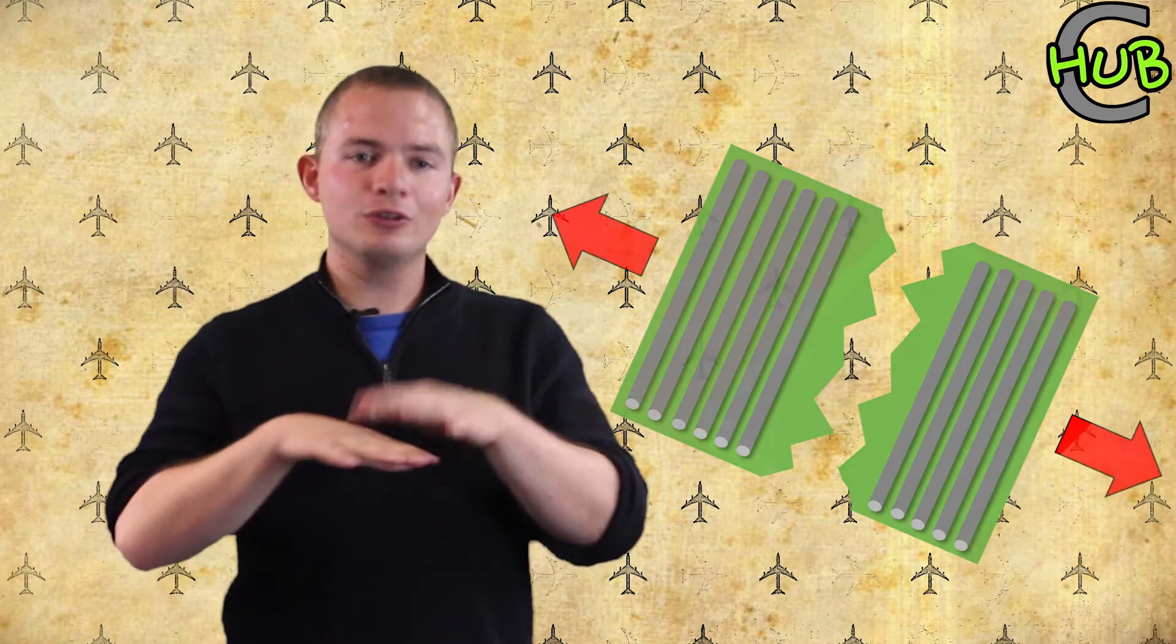So we now have our fiber and matrix combined, but we don't really have a useful material. You see it's only really effective in the direction of the fibers. We therefore stack multiple layers of the material in different directions to ensure that we have the fibers in the directions that we want them.